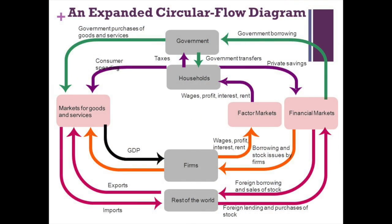Here you see we have the circular flow diagram. We're just going to take a look at the basic inside of the diagram for right now, which includes the households, factor markets, firms, and the markets for goods and services. Firms are considered any company that provides goods or services to the markets.